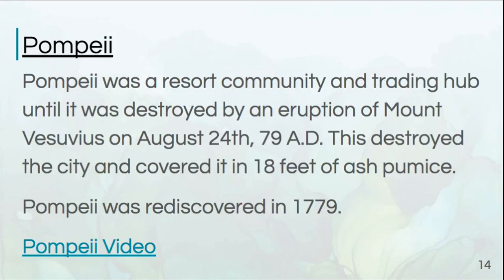Let's talk about Pompeii, because we do have some pieces of art that exist from there. Pompeii was a resort community — very luxurious — and also known as a trading hub. It was destroyed by the eruption of Mount Vesuvius on August 24th, 79 AD, which was this last Monday, so we're very close in time to the anniversary of Vesuvius erupting. The eruption destroyed the city and covered it in 18 feet of ash and pumice — an absolutely massive amount — which essentially buried the entire community and preserved it until it was rediscovered in 1779.